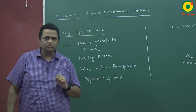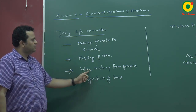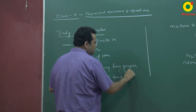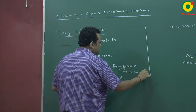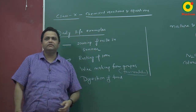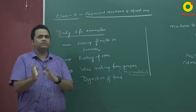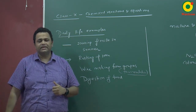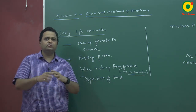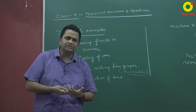Rusting is also a chemical process. We are also talking about wine making from grapes — this is fermentation. In wine making, grapes are crushed, bacteria act on them, and after some days alcohol formation begins. Similarly, if we keep cane sugar for some days, fermentation starts and alcohol is produced.